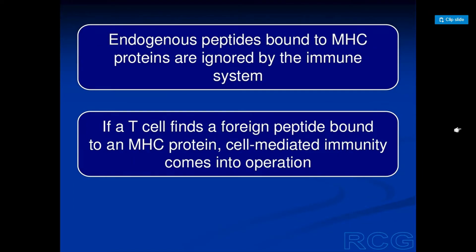Endogenous peptides bound to MHC proteins are ignored by the immune system. If a T-cell finds a foreign peptide bound to the MHC proteins, a cell-mediated immune response is activated. This is how they distinguish between self-cells and non-self cells — foreign peptides are easily recognized and they activate cell-mediated immunity.